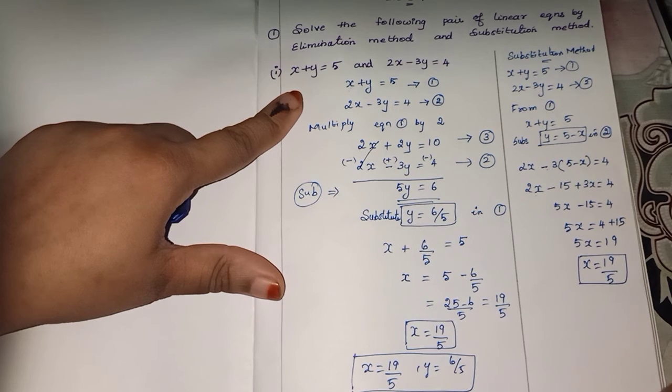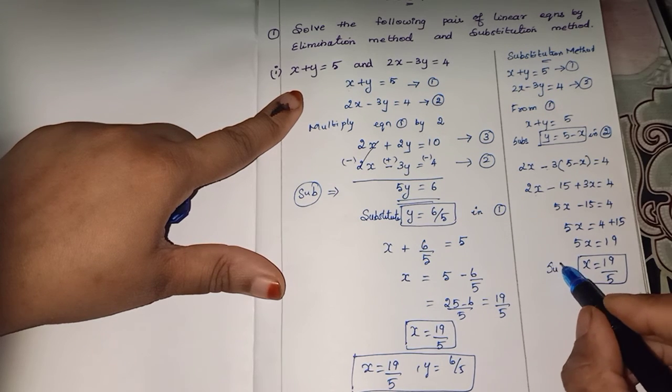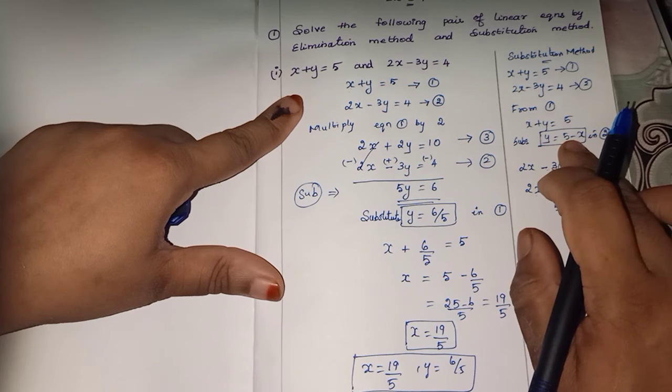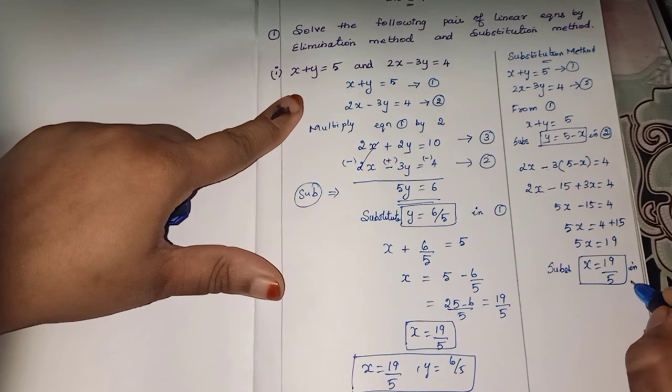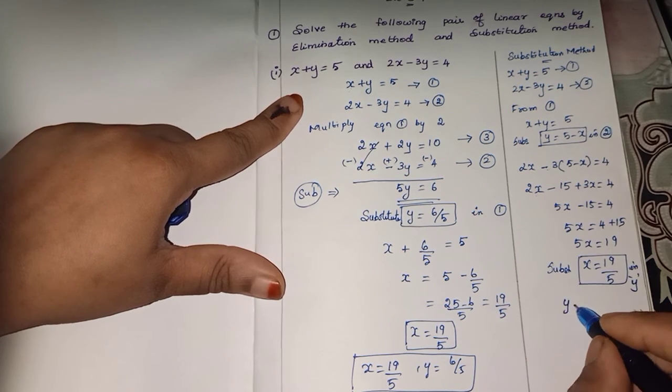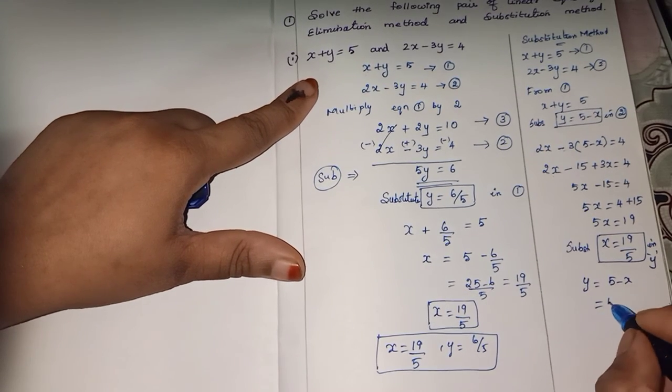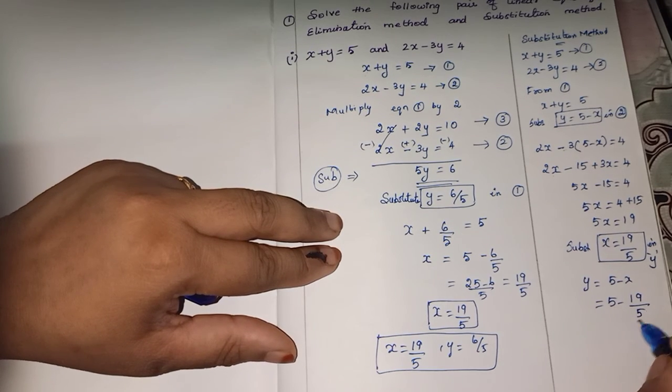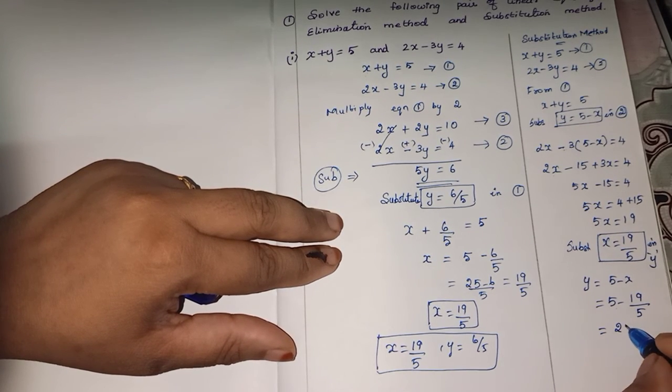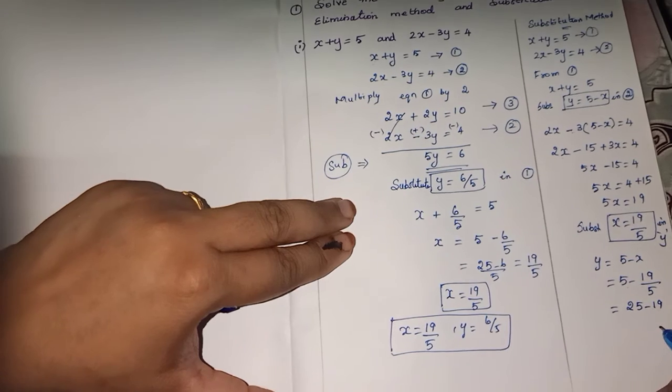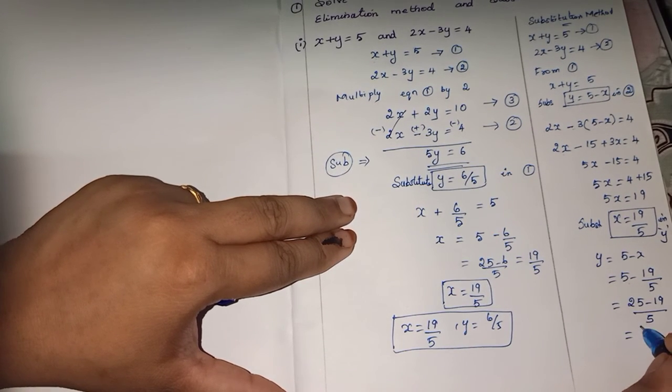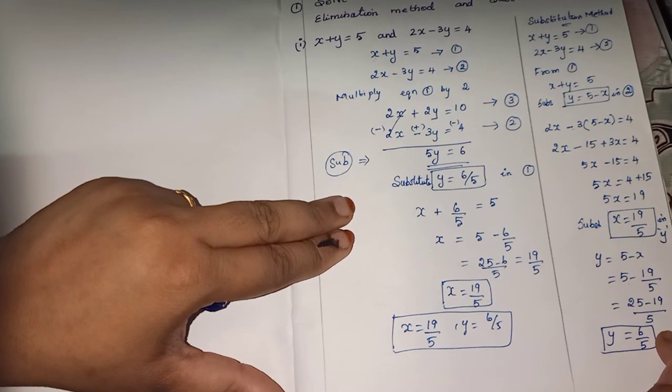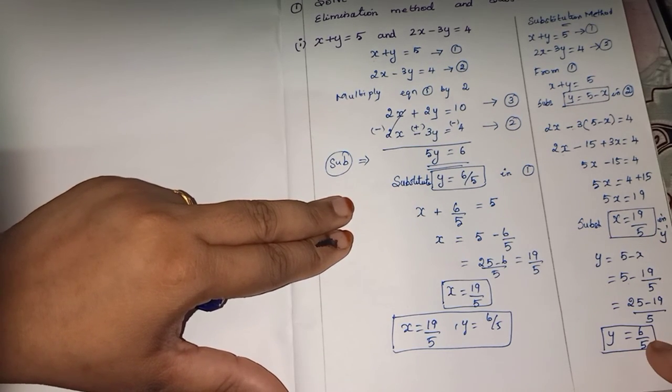Now you can substitute x in y equals 5 minus x. So y is equal to 5 minus 19 by 5. Same answer: 5 is 25 by 5, minus 19 by 5, that is 6 by 5. So you are getting x value 19 by 5 and y value 6 by 5 in both elimination method as well as substitution method.